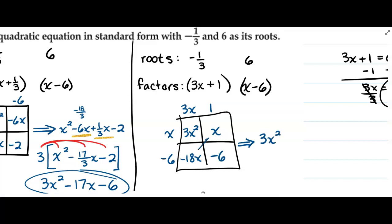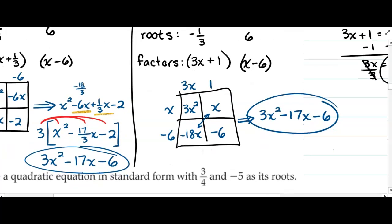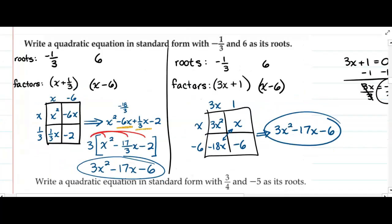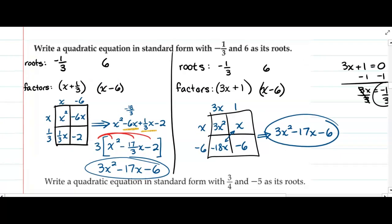Taking these terms out of the box, these are still like, so I'll put them together to get negative 17x - 6. You can see we get the exact same answer.